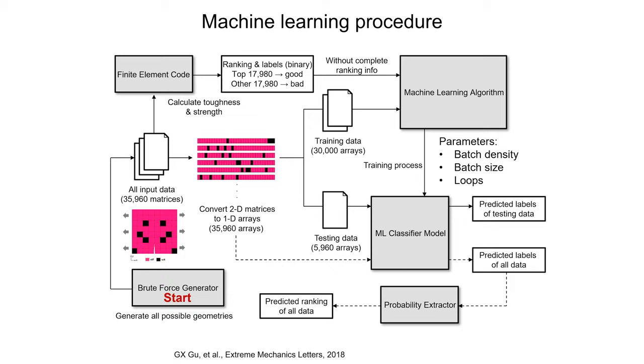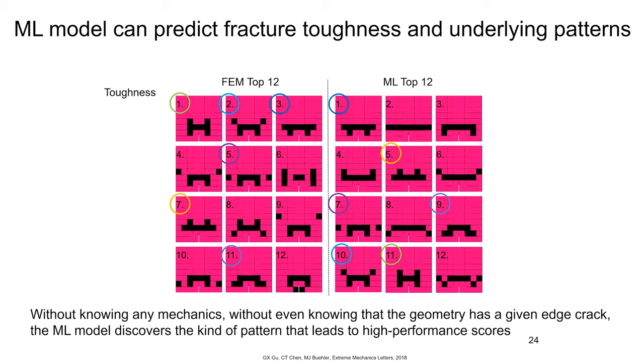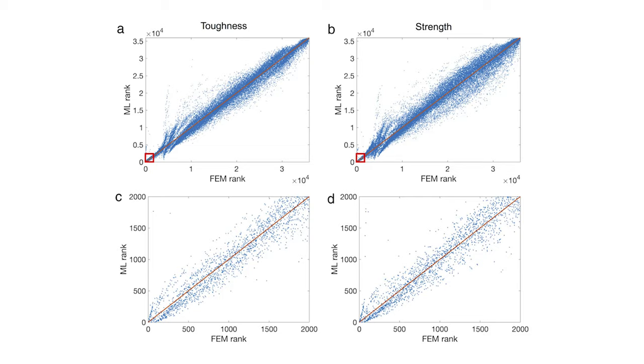We have used this idea to create a machine learning model that works with the patterns we see in materials and relates them to functions. We run a finite element simulation or experimental paradigm to test various microstructures and their performance, then train a CNN to relate these patterns to function. Once the model has learned this, we use it as an optimization paradigm. We can validate the model by solving the full problem for a small enough system in brute force, and we've shown that the machine learning model has truly captured the physics of the relationships between microstructure and function.